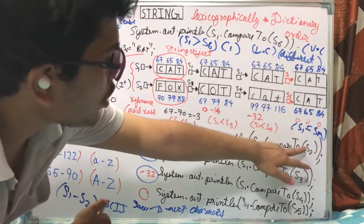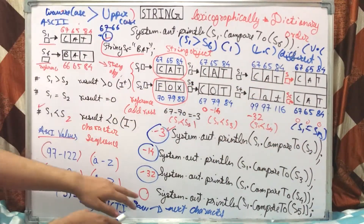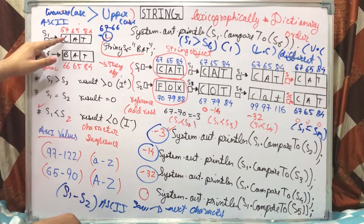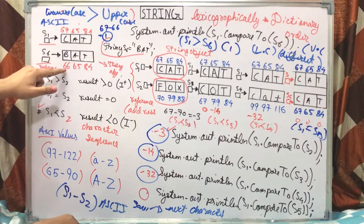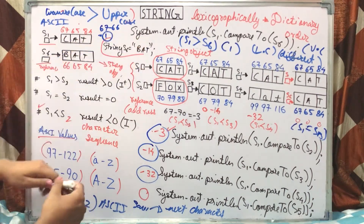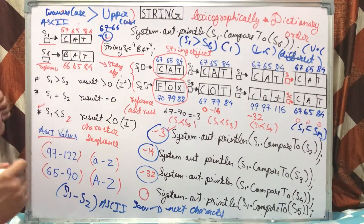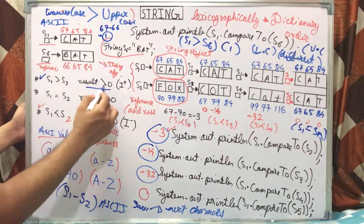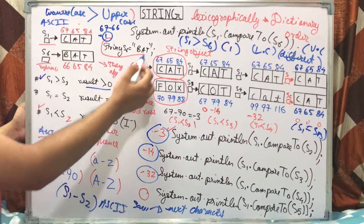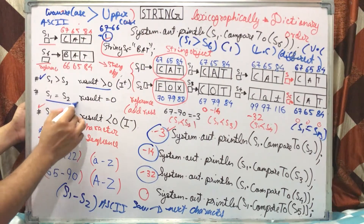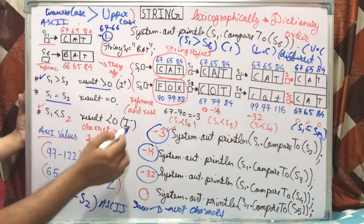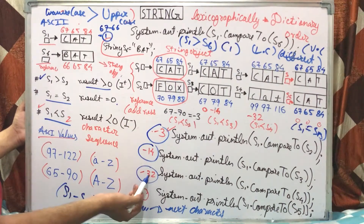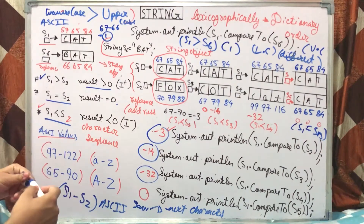When both strings are CAT uppercase, the result is 0. When S1 and S6 are compared, C is greater than B: 67 minus 66 gives output 1. So when s1 and s2 come to the result, it is negative. Minus 3, minus 14, minus 32 are all negative integers.